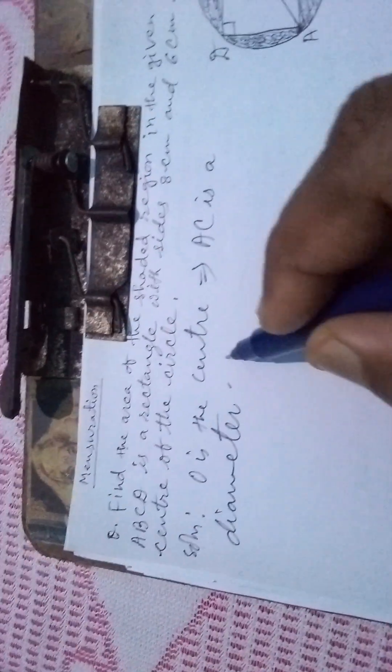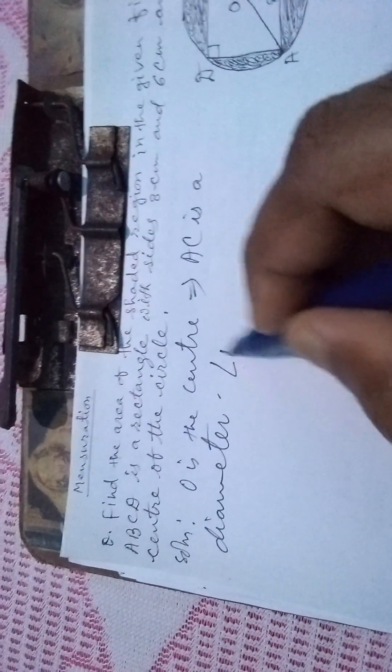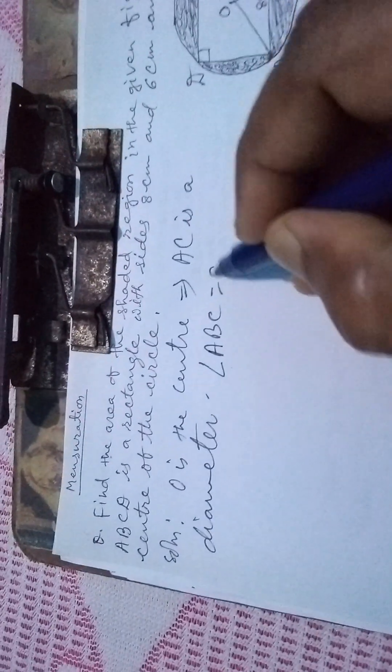Now you know that angle ABC equals 90 degrees.